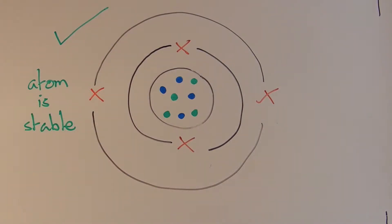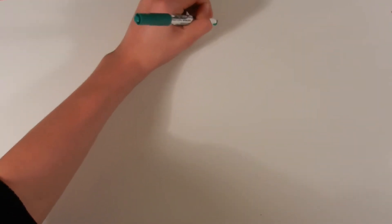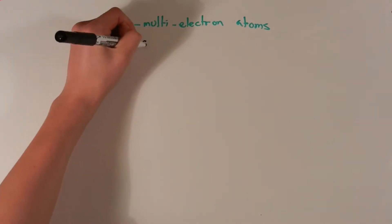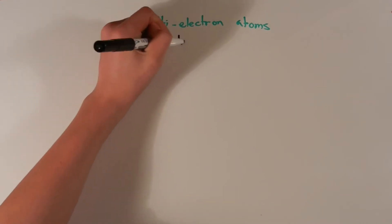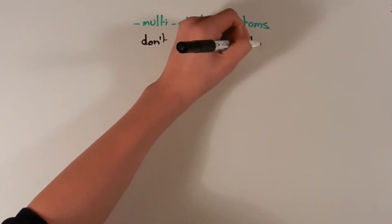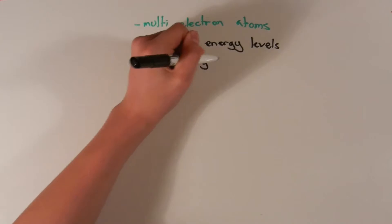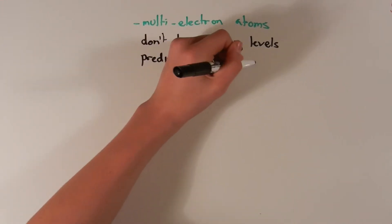The atom would be completely stable in the state with the smallest orbit, since there is no orbit of lower energy into which the electron can jump. There are a few problems with the Bohr model. The two main ones were its failure to predict multi-electron atoms and doublets and triplets, and its contradiction of the uncertainty principle.